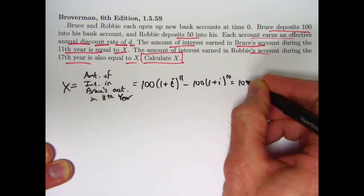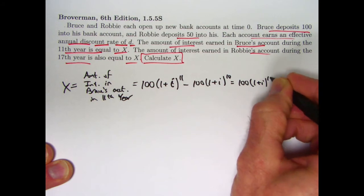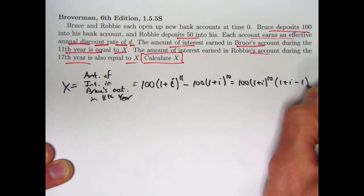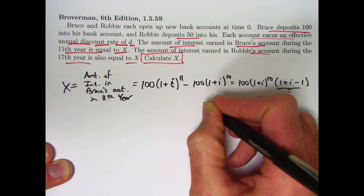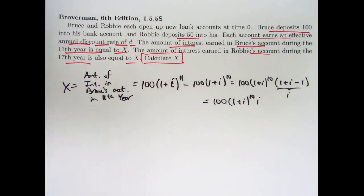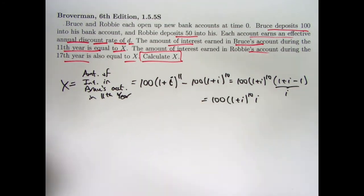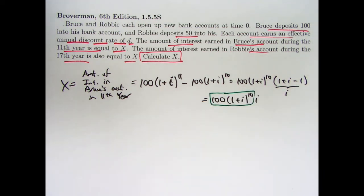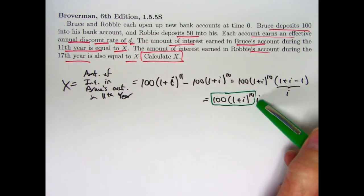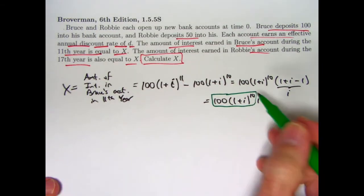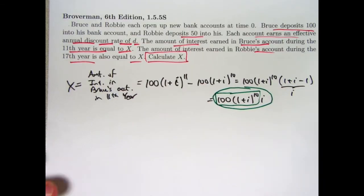This can be rewritten by factoring out the common factor of 100 times 1 plus i to the 10th, and then what's left over is 1 plus i minus 1. What's left over is really an i. And so this expression, 100 times 1 plus i to the 10th times i is the amount of interest earned during the 11th year. I want you to realize that this expression can be figured out without writing a difference. This quantity is the amount in the account after 10 years have gone by. If I multiply that by the effective annual interest rate, that will be the amount of interest earned during the 11th year. So you don't have to write this as a difference. You can just jump to this last expression that I'm going to fully circle here to get this amount of interest.